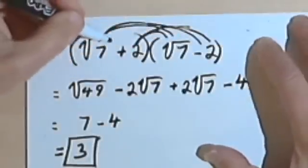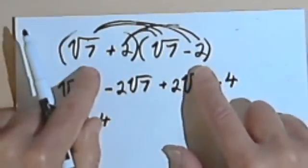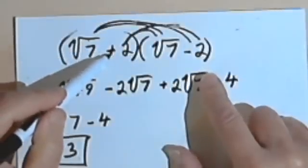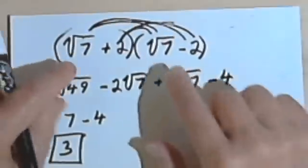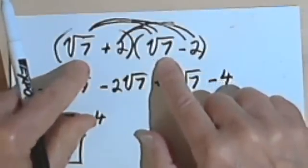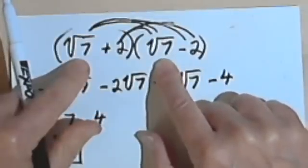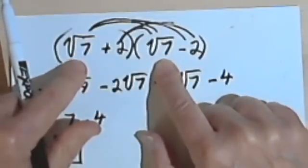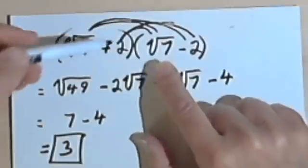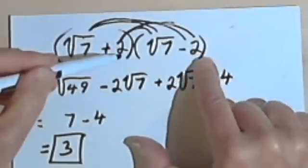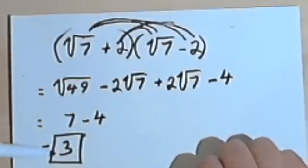When you have a multiplication problem like this, if you take a look at it, I've got basically two identical expressions except that in one case I've got a plus sign and in the other a minus sign. When you see something like that, you can do a shortcut: take the first part of each expression and write the radicand, since we're squaring a square root — that gives us 7. Then write a negative sign, square the last terms to get negative 4, and combine them together.